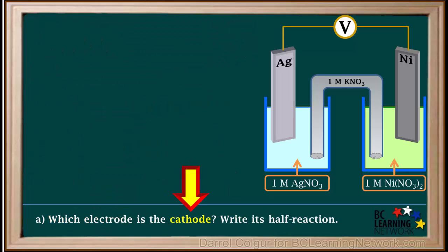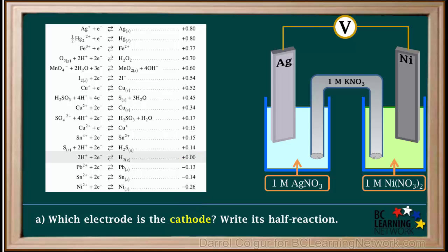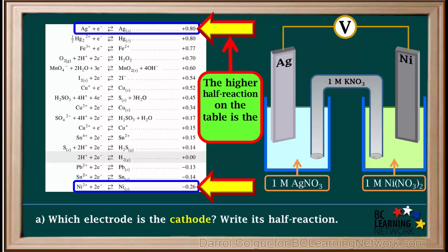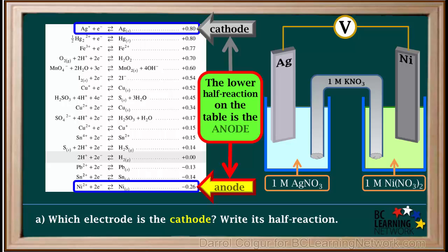In part A, we're asked to identify the cathode and write its half reaction. We'll look at the reduction table in the data booklet and locate the half reactions for silver and nickel. The rule is: the higher half reaction on this table is the cathode, and the lower half reaction on the table is the anode.